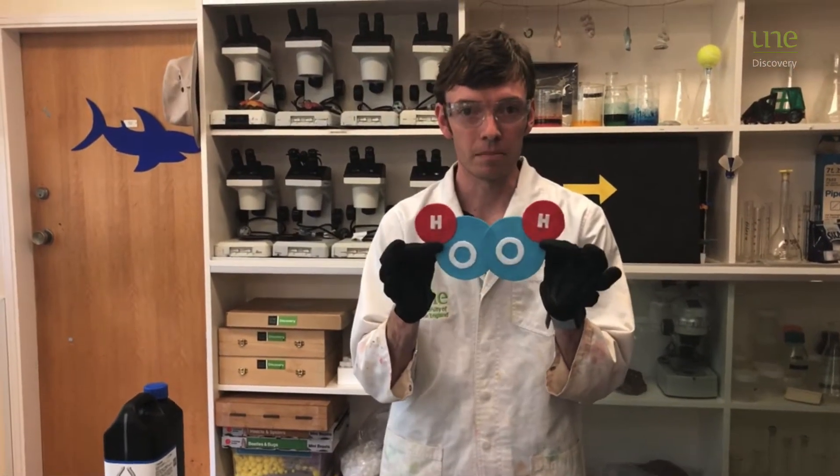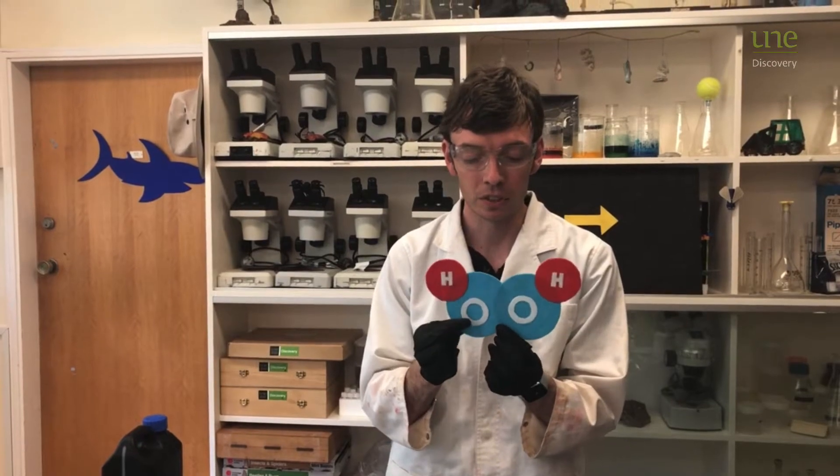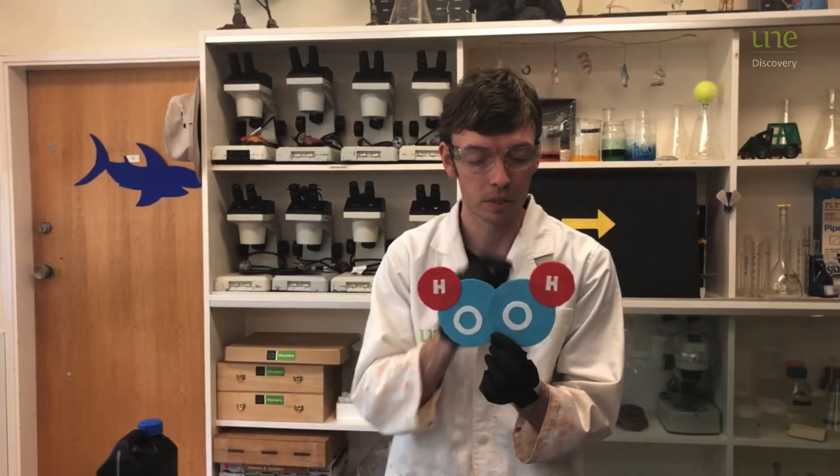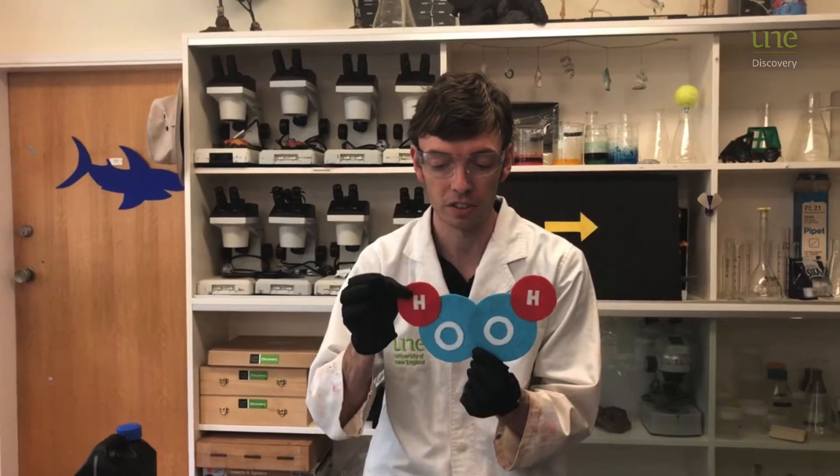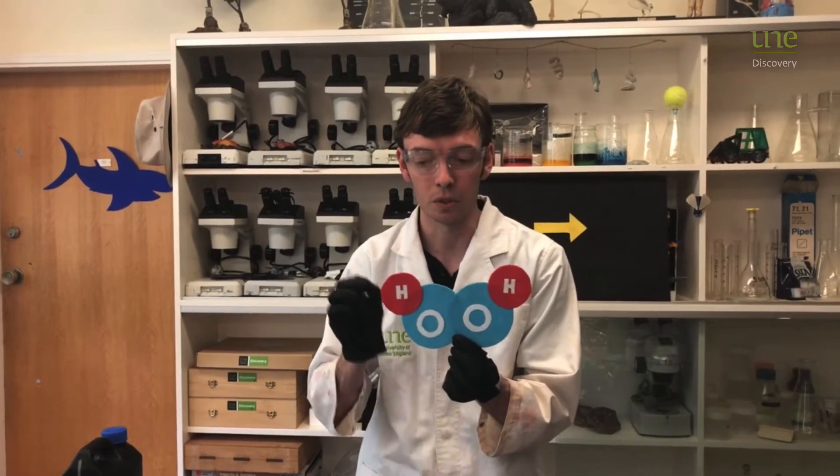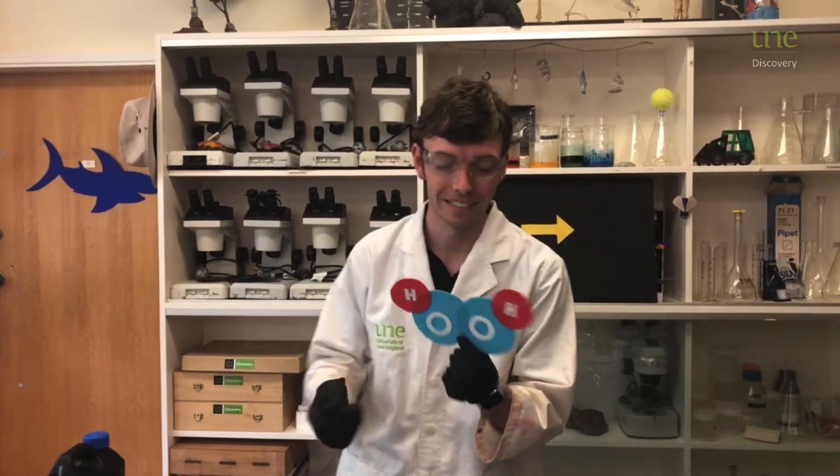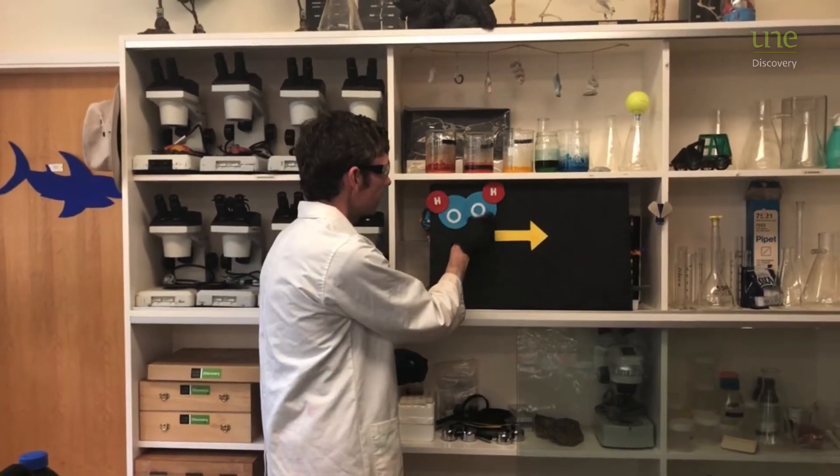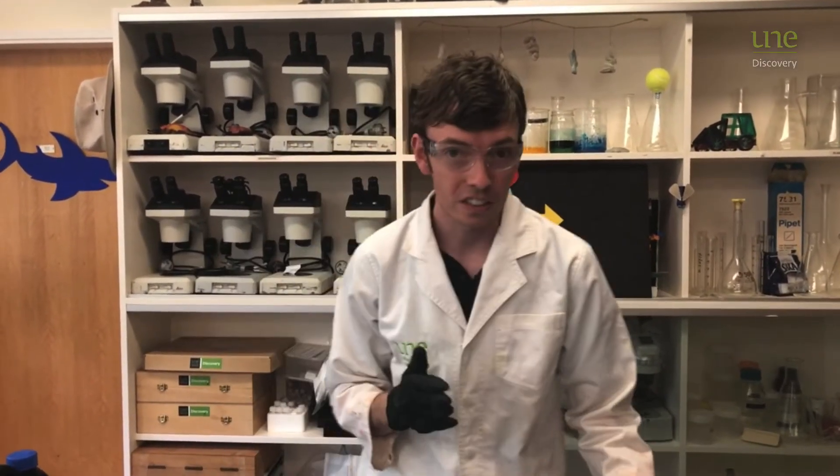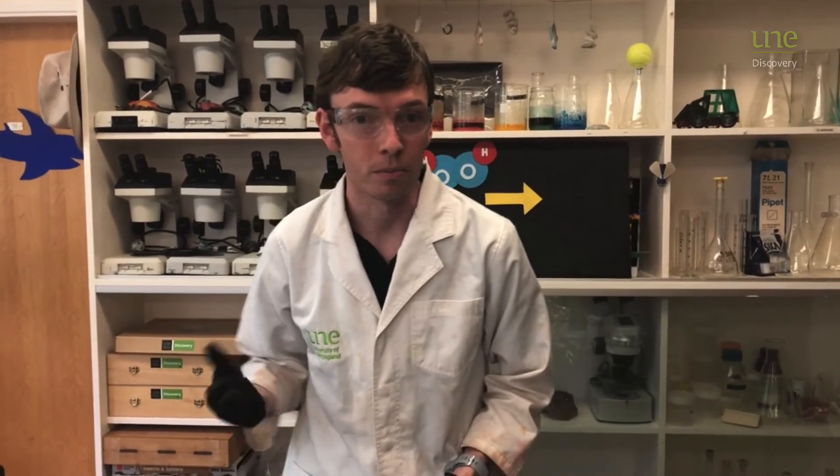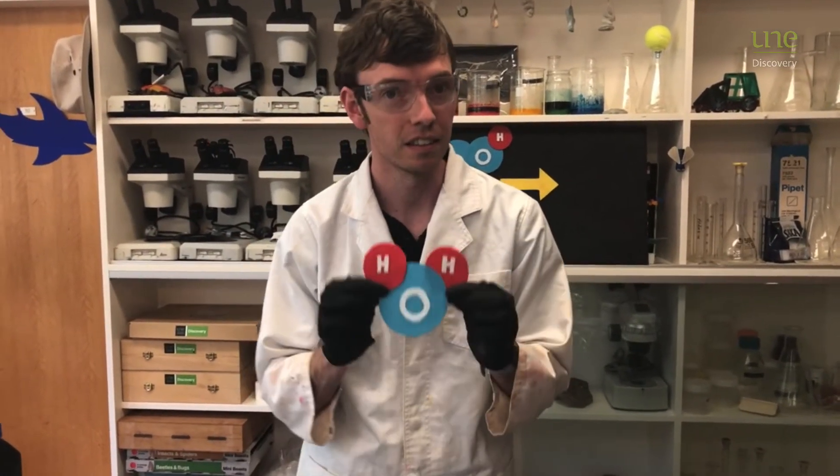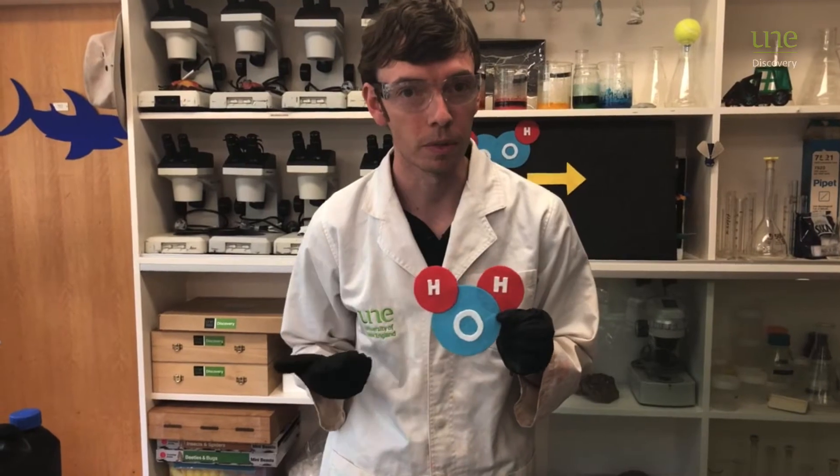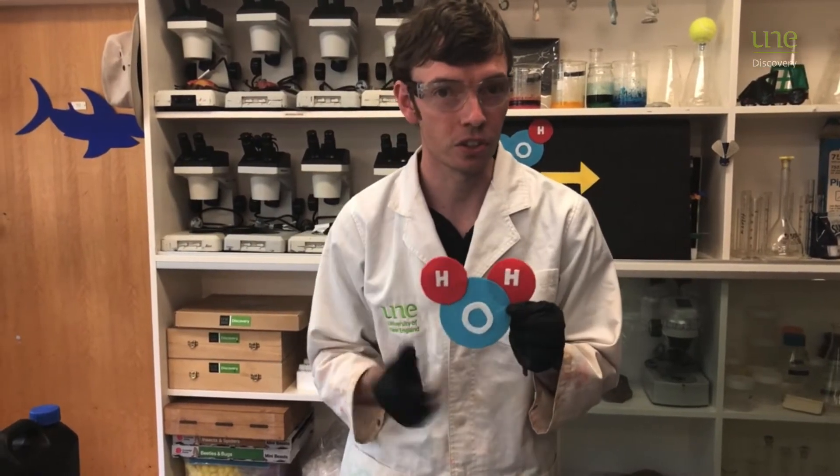So this is what a molecule of hydrogen peroxide looks like. It's made up of two atoms of oxygen, the two O's, and two atoms of hydrogen, the two H's, or one hydrogen per oxide, hydrogen peroxide. Now hydrogen peroxide is very similar to another molecule that you might have come across before and that is this one. This is a water molecule, or H2O.